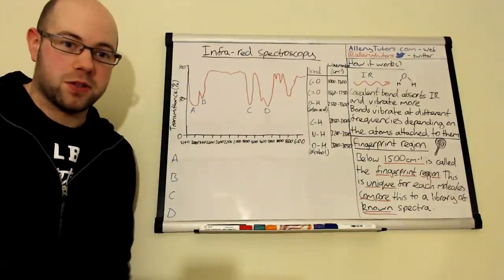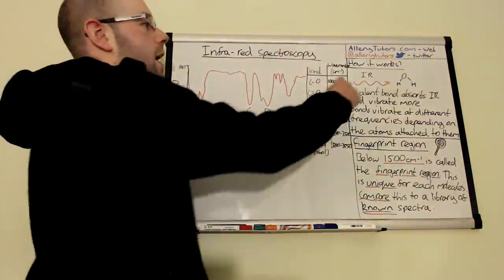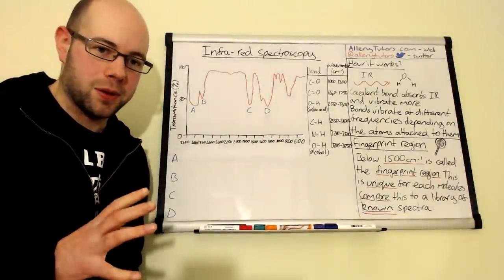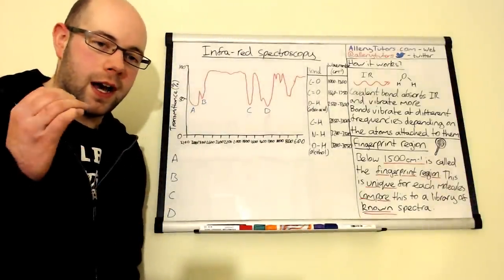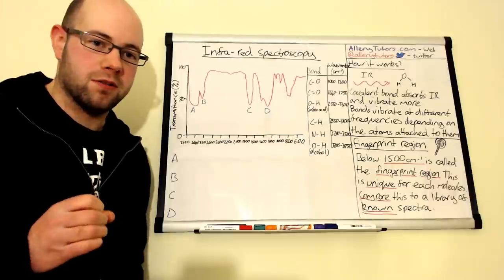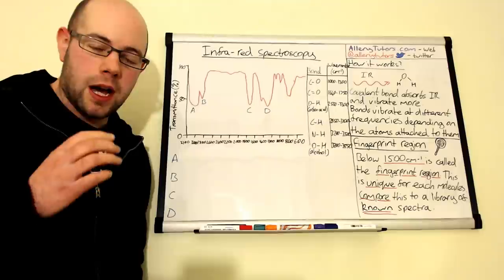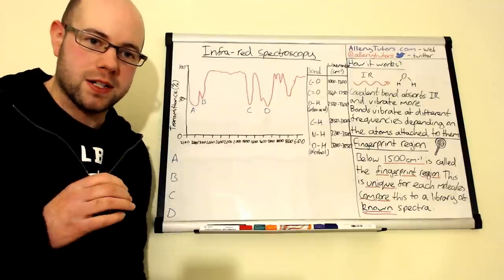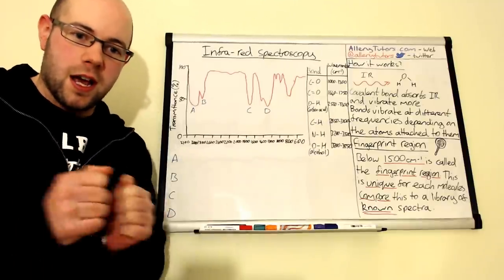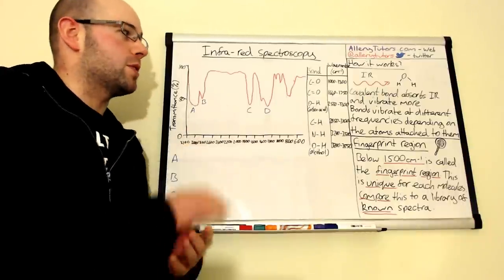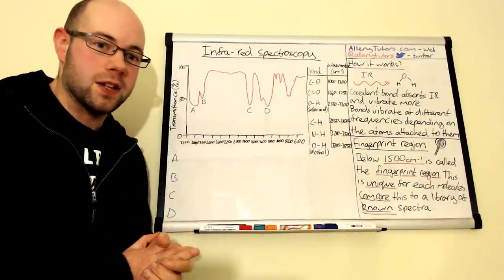Infrared spectroscopy effectively works by firing infrared radiation at a sample or set of molecules, and the bonds inside their molecules effectively absorb the infrared radiation and the bonds start to vibrate. Sometimes they can stretch backwards and forwards, sometimes they can move up and down as well. So they can stretch and bend in different ways.